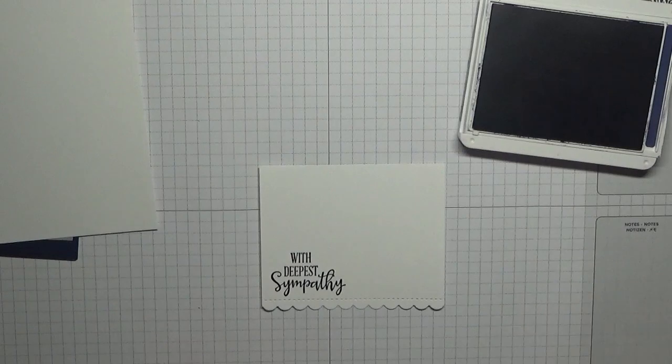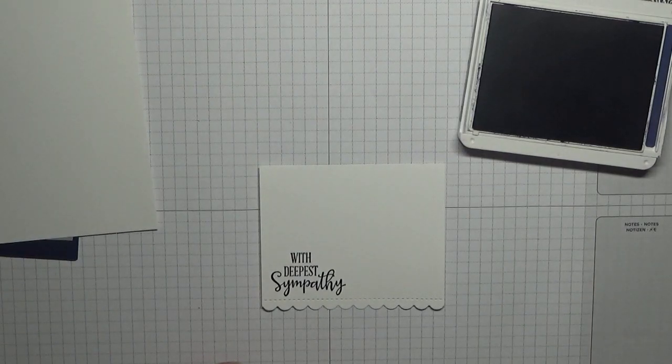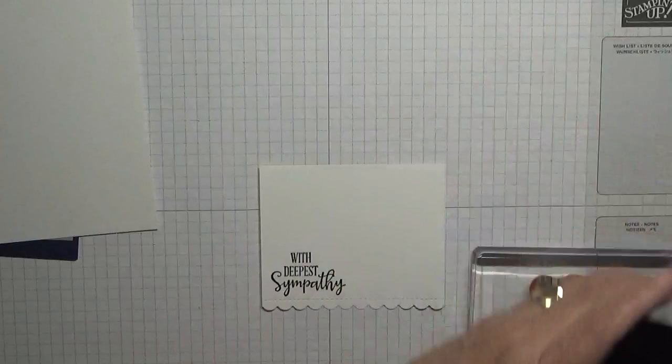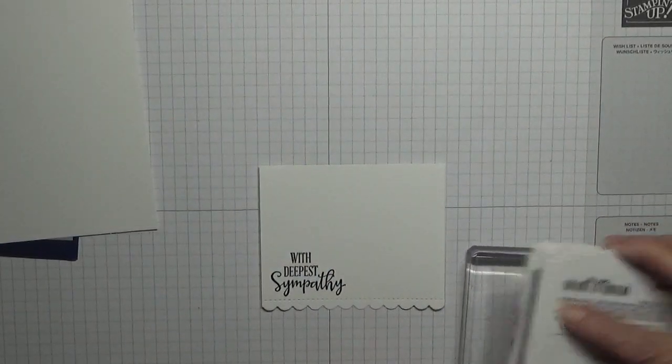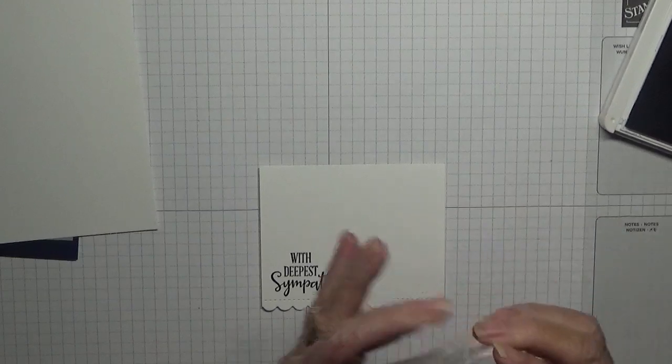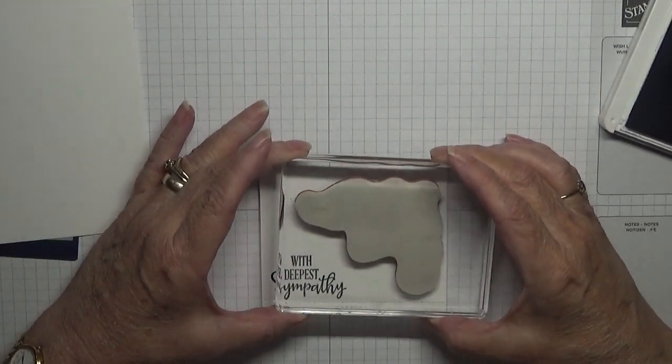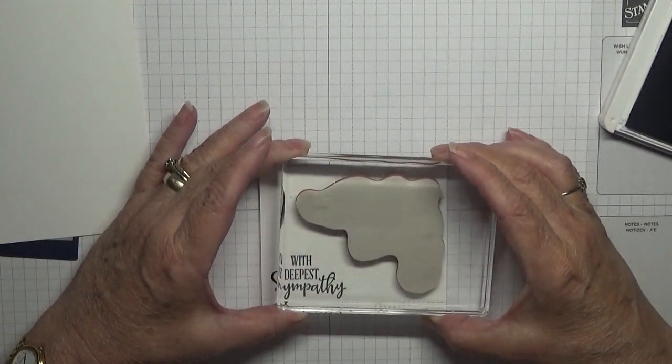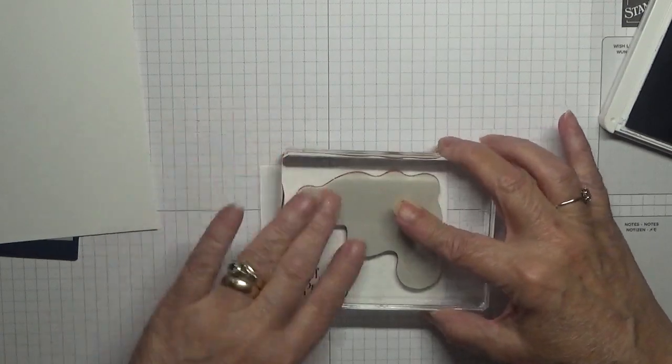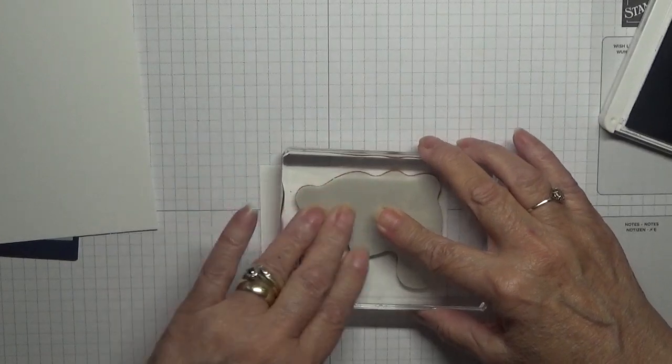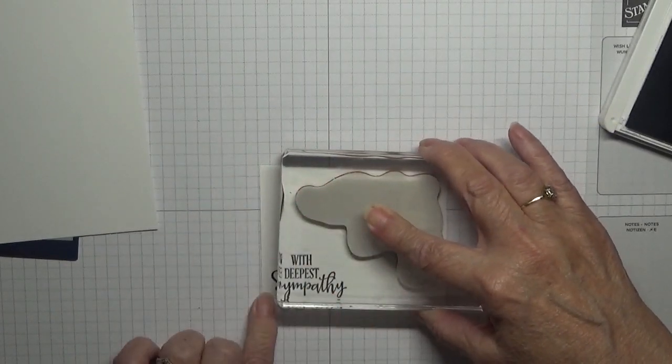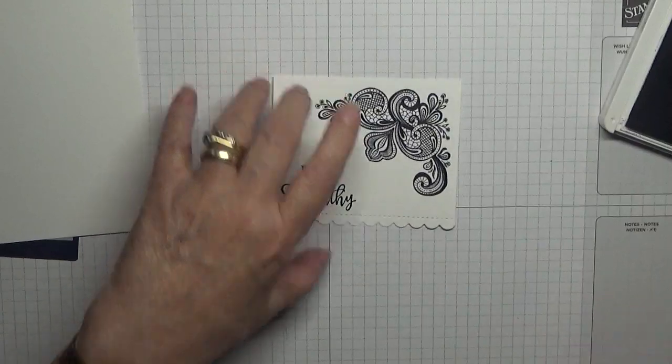And that's come out perfect, which is great. I've got this big one and we're going to stamp this image in the top right hand corner. That's come out quite nice.